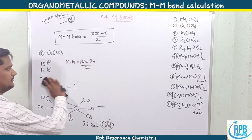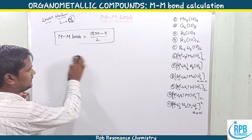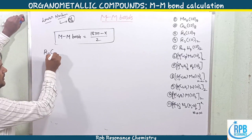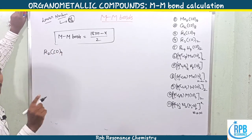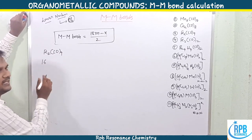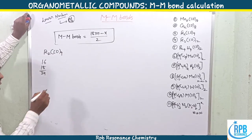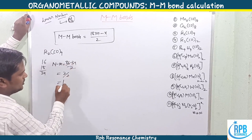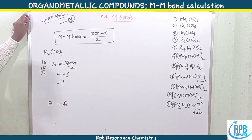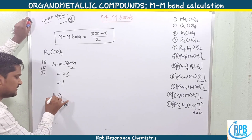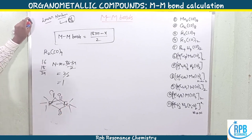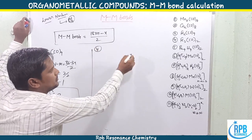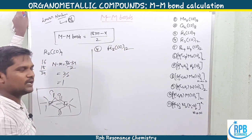Now let's look at Fe₂(CO)₉. Iron belongs to s²d⁶, giving 8 electrons per metal. Two Fe atoms give 16 electrons, and nine carbonyls give 18 electrons, totaling 34 valency electrons. Metal-metal bonds = (18×2 − 34) / 2 = 2/2 = 1. One Fe–Fe single metal bond is observed. The structure of Fe₂(CO)₉ features three bridged carbonyl groups.